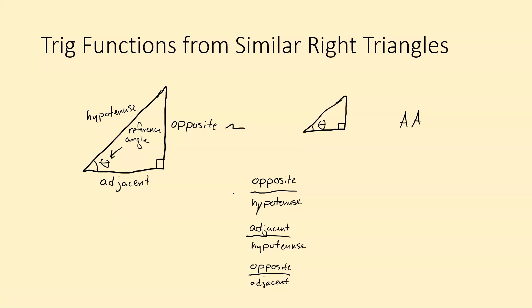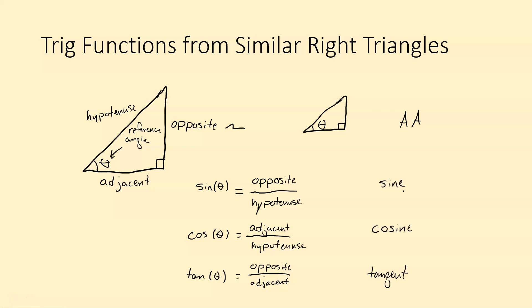The people who came up with trigonometry decided to create functions that tell us what those ratios are. The words used are sine, cosine, and tangent for these three functions — spelled s-i-n-e, c-o-s-i-n-e, and t-a-n-g-e-n-t. Sin, cos, and tan are just the abbreviations for the function notation.